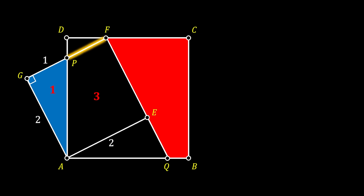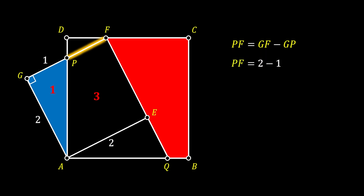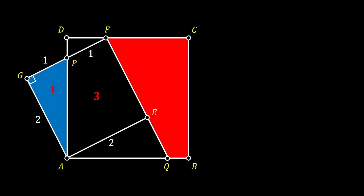Now let's take a look at the line PF. We can see that this line is equal to the difference between the lines GF and GP. We know that the line GF is equal to two since it represents the side of our smaller square, so we can substitute the values and get that the line PF has the length of one as well. You can now clearly see that point P is actually located at the middle of the line GF, but of course we did not know this fact at the beginning of our problem.